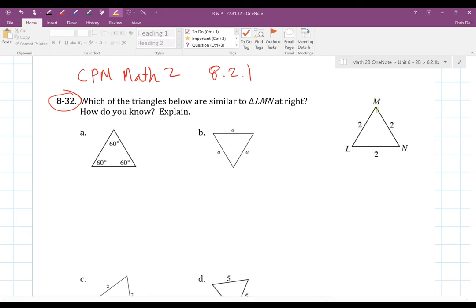It says which of the triangles below are similar to triangle LMN at the right. So here's triangle LMN: L, then M, and then N. Let's talk about this one. What do we notice with LMN? I noticed that all the sides are two, they're all the length of two. So what that tells us is this is an equilateral triangle.